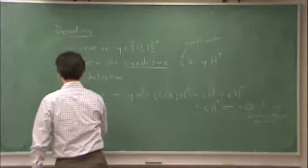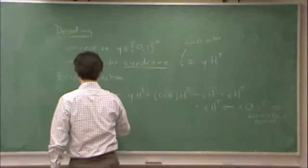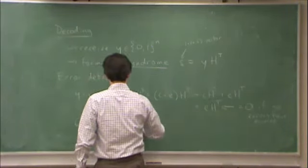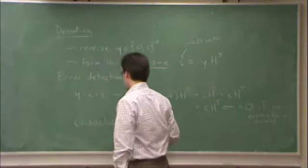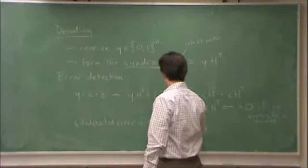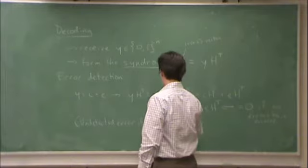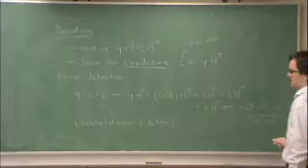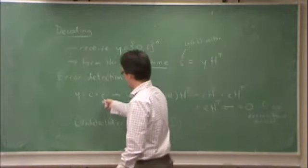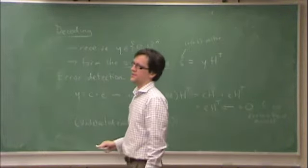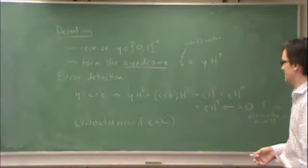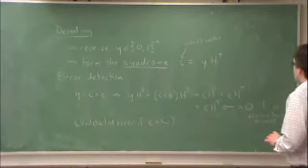So undetected error if e happens to be a code word. In other words, if e is in the code. And that makes sense because if e is in the code, e plus c is a valid code word because this is a linear code.